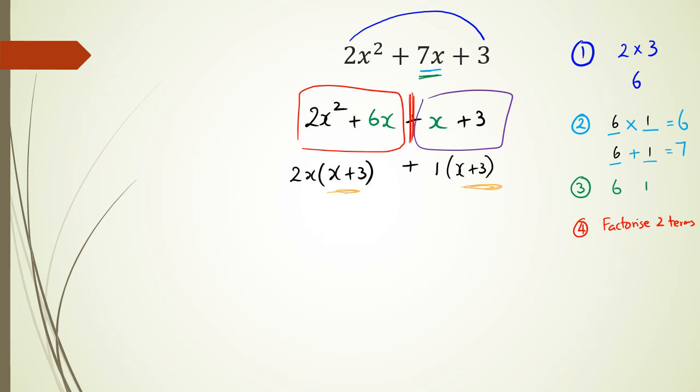So now what you have is you've actually got the two golden parts, which is the x plus 3, as a common factor. So you can take that out, and you'll end up with x plus 3. And now you have your 2x and plus 1 is going to end up here. And with that, you have actually factorized this as x plus 3 times 2x plus 1.